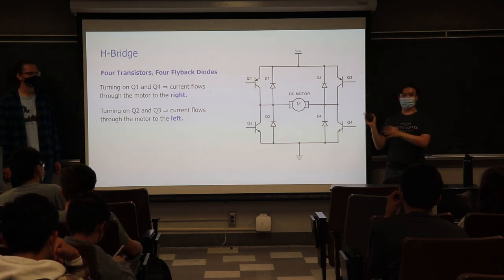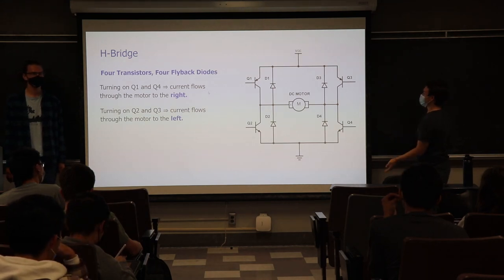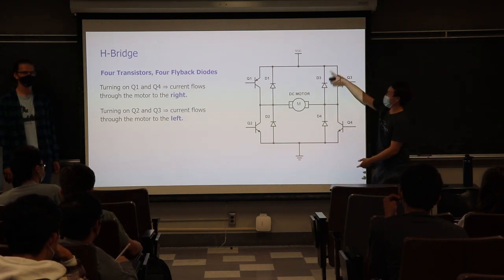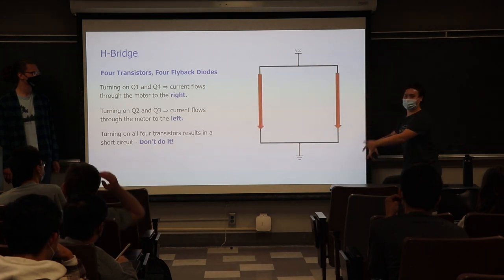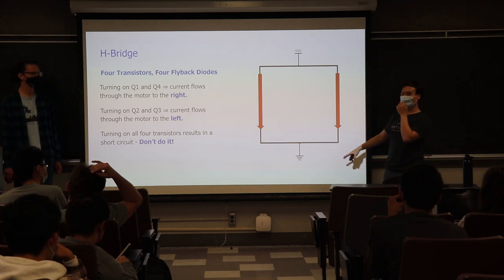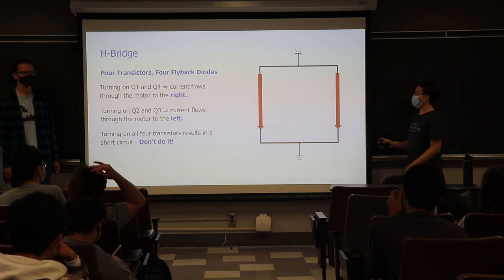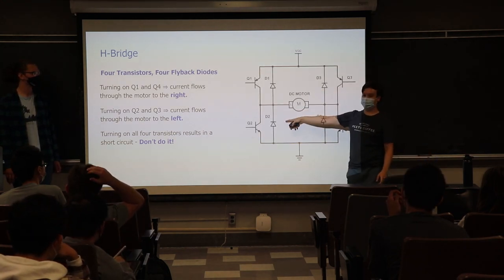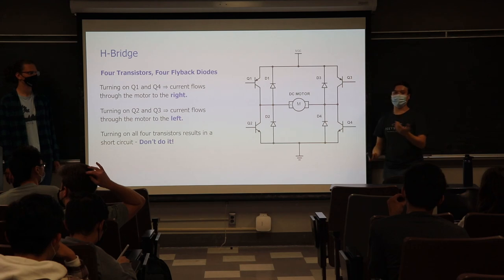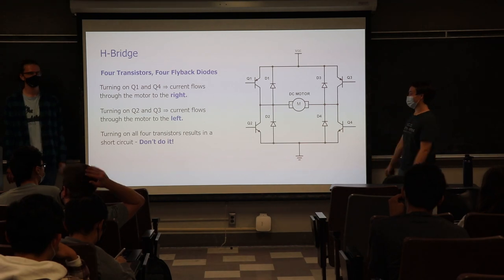One important problem with the H-bridge: if you turn on Q3 and Q4 simultaneously, you'll have a short circuit — power goes straight from VCC to ground and will fry your H-bridge. It'll short through those transistors and cause damage. In our program, we must never turn on those two combinations at the same time. Our hardware makes that easier, and our code templates reduce the risk, but know that this is one way to instantly destroy the H-bridge on your RAT.